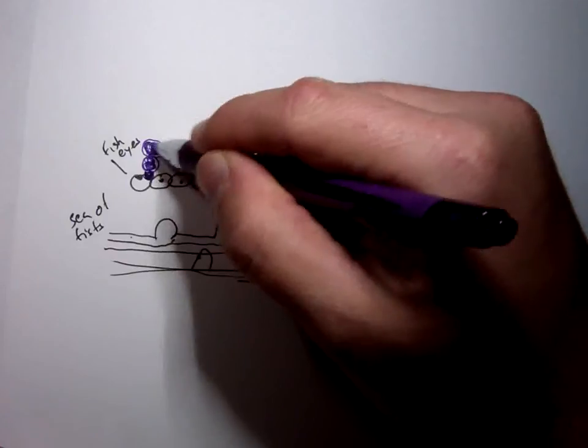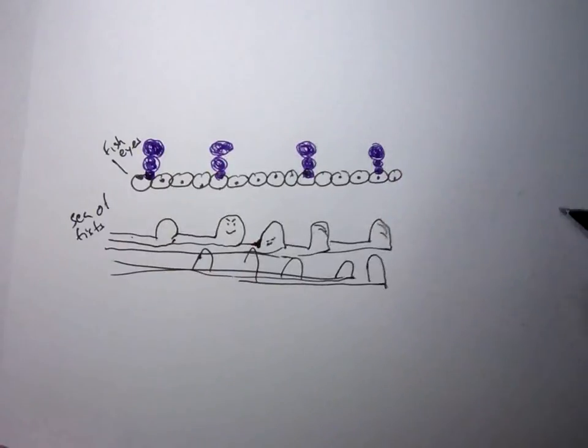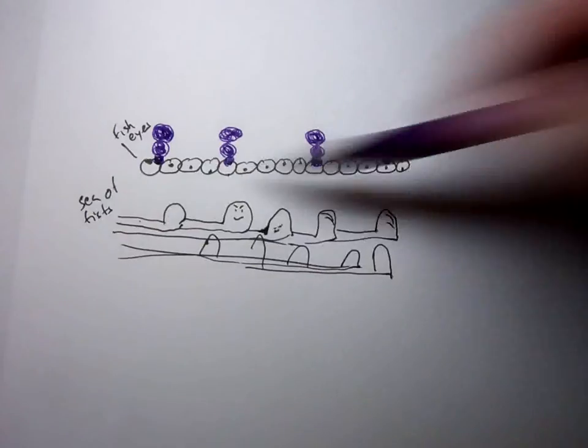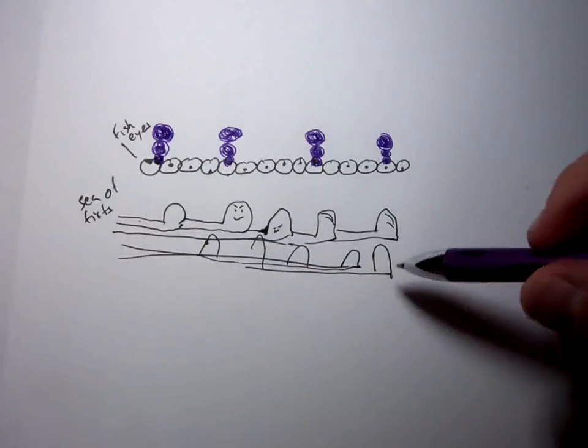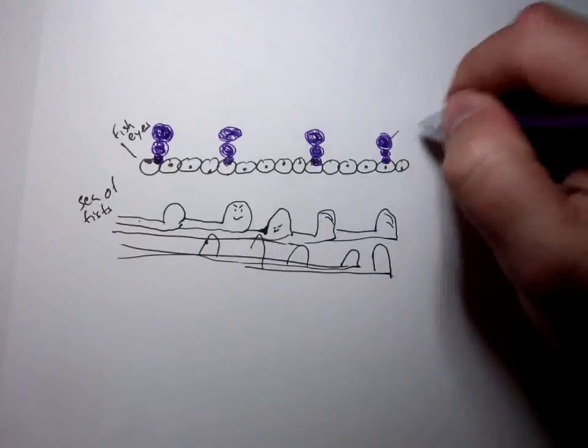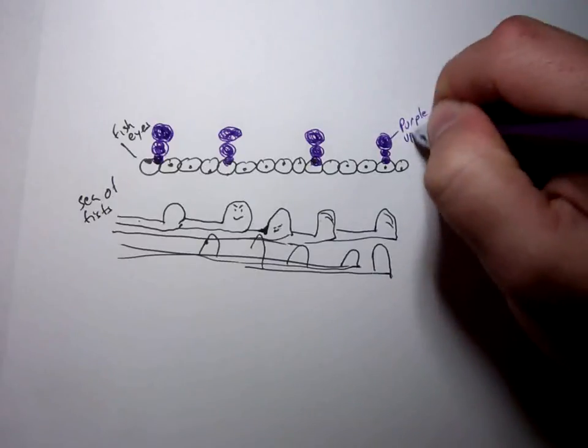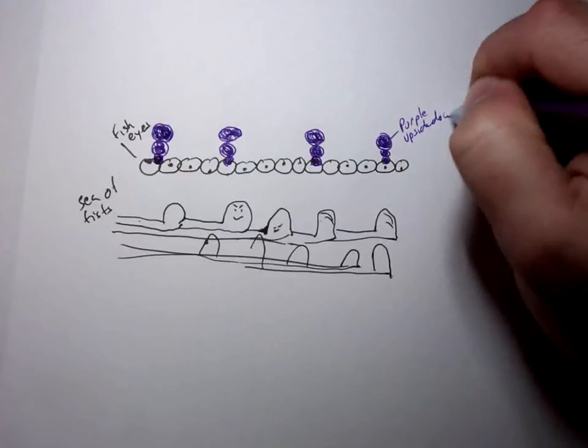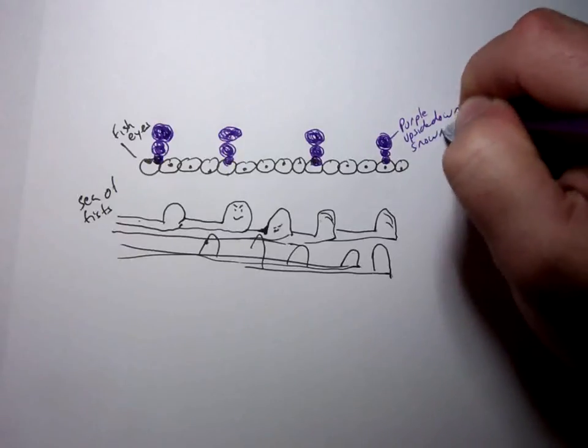Now, what part of the fish eyes do they punch? They punch the pupils. Now, you see, I've only got four snowmen lined up here. And I've got a huge sea of fists and all these unprotected fish eyes. I better label these. Purple. Upside down. Snowmen.